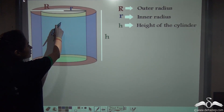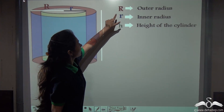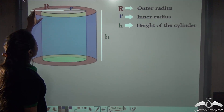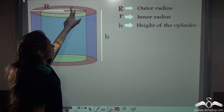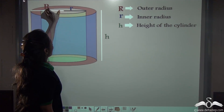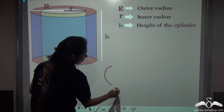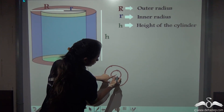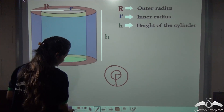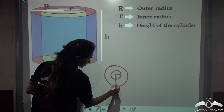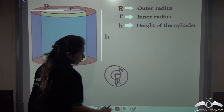A hollow cylinder has the dimensions: height represented by h, capital R is the radius of the outer circle, and small r represents the radius of the inner circle. You can say small r is the inner radius and capital R is the outer radius. The hollow cylinder is hollow from the middle, so the inner circle has some radius and the outer circle also has some radius.